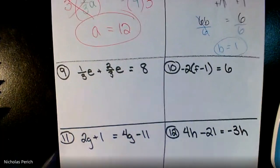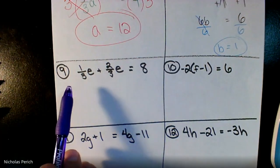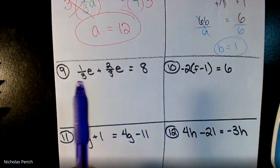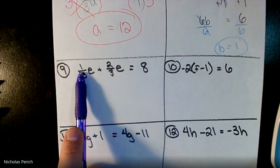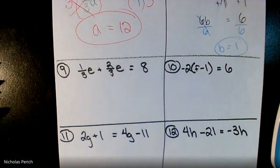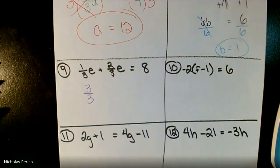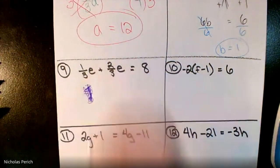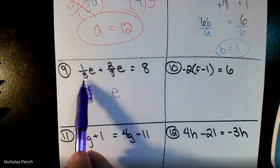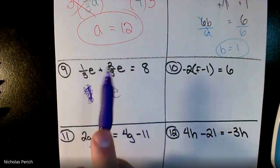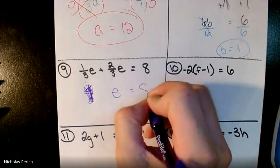Two fractions — let's use common sense. I have an eggplant chopped into three parts. One-third plus two-thirds equals three-thirds, which is just one whole. So one-third e plus two-thirds e equals one whole e, and that equals eight. Simple as that.